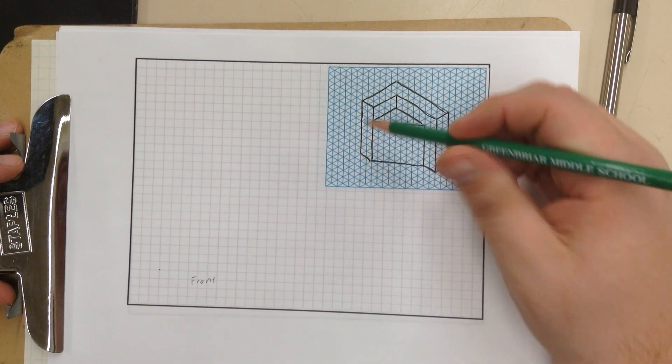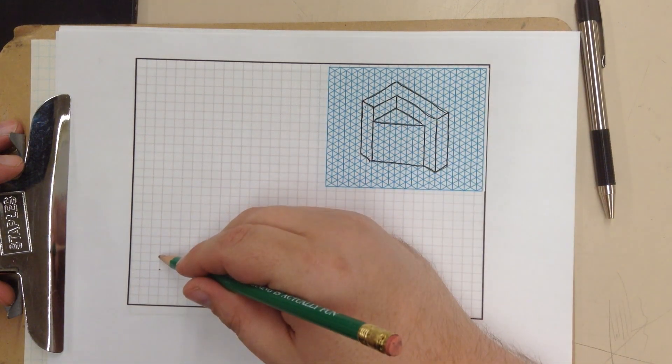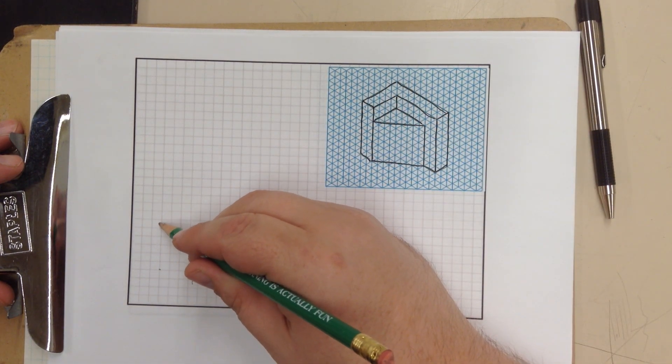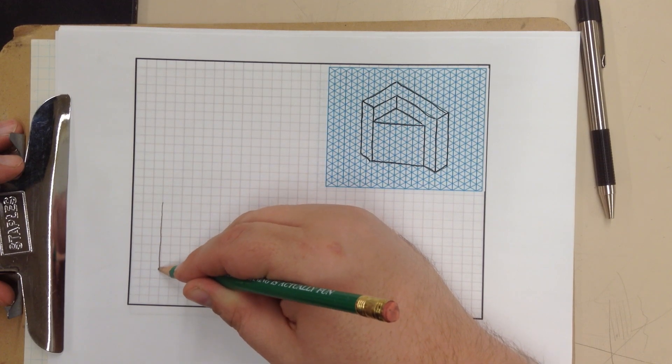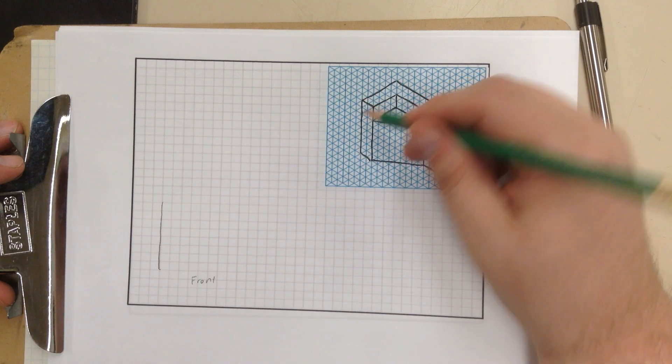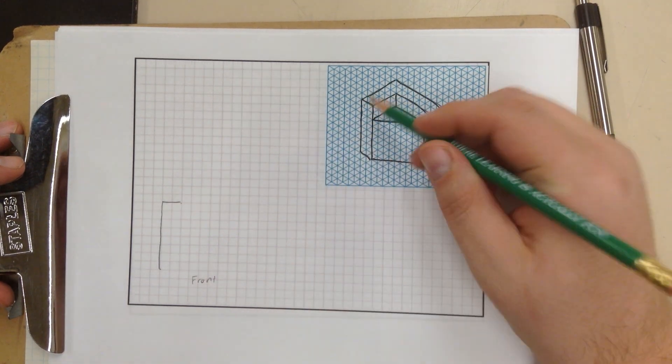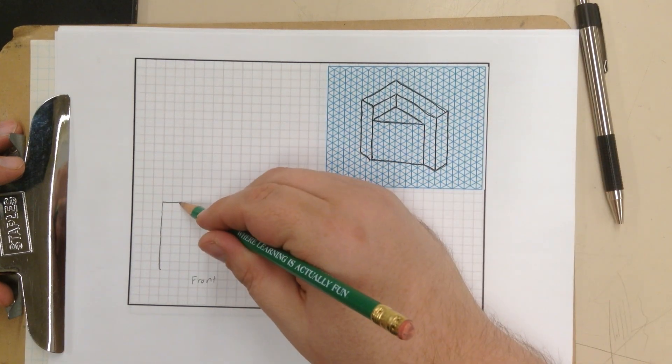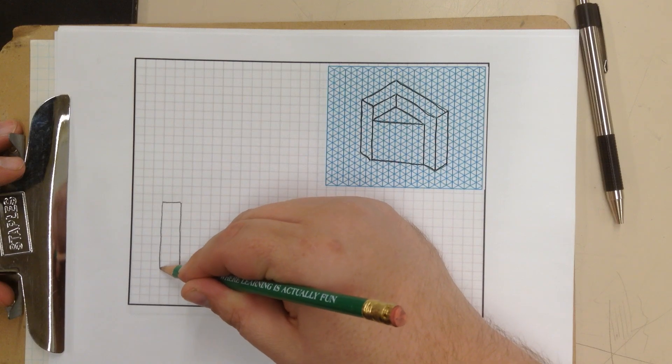I gave myself an origin point right there. And this is 1, 2, 3, 4, 5, 6, 7, 8 up. 1, 2, 3, 4, 5, 6, 7, 8 up. So I'm going to draw my line right there. It's too wide. Too wide. And it is a closed rectangular shape. So I'm going to close it right there.